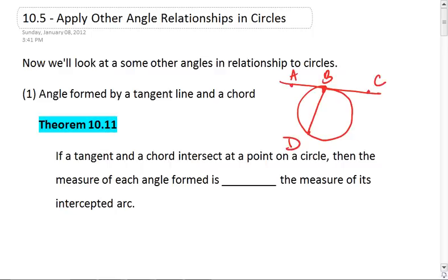We have tangent line AC and chord BD. If a tangent and a chord intersect at a point on the circle—that would be point B here, our tangent point—